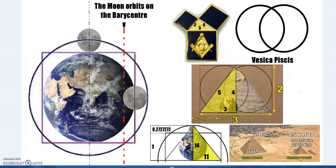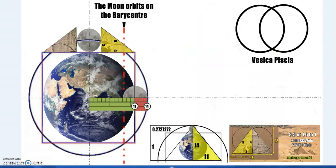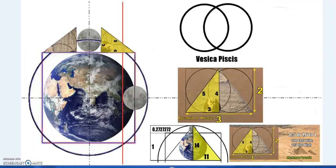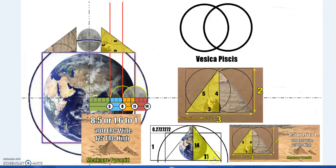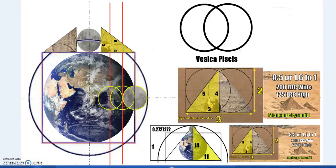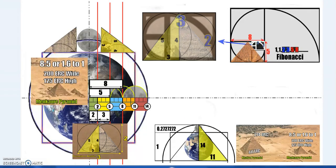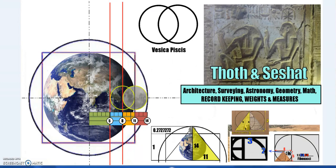Three-four-five triangles, such as in Khafre's pyramid, give us a Vesica Piscis — it's the same geometry. Overlay the double Vesica and we get the same ratios built into the other pyramids and how the pyramids relate to one another — multiple redundancy to confirm the point. These pyramids, joined using the geometry of the pyramids, give us Fibonacci numbers. Especially in regards to Thoth: architecture, surveying, astronomy, geometry, math, record-keeping, gods of weights and measures.